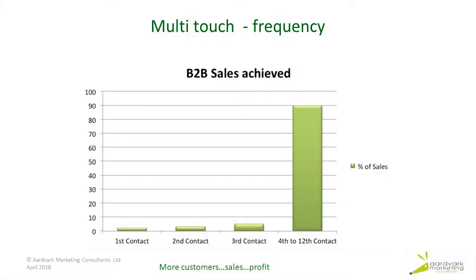Let me go back to why 12 is powerful. You'll see in front of you a graph showing the number of contacts. We start with the first contact — which might be a salesperson doing a cold call — then a second contact the following month, another telephone call, which is a typical sales activity. If they're good and haven't given up yet, they might try a third contact. But most salespeople will not do 4, 5, 6, all the way to 12.